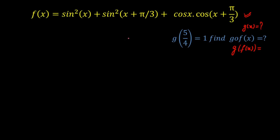The only thing I can do is determine the nature of f(x) — whether it is an increasing, decreasing, or constant function. I have two approaches: differentiate this function, or simplify it using trigonometric identities since all terms contain trigonometric ratios. I've decided to simplify using trig ratios to find the value of g(f(x)).